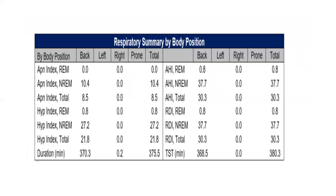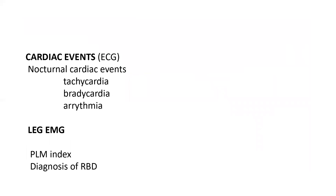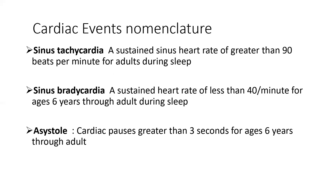The data will be presented in different forms in different polysomnographic machines, including the apnea index in REM and non-REM, the hypopnea index in non-REM, and data in different body positions. The cardiac parameters related to sleep include tachycardia, bradycardia, arrhythmias during sleep, and leg movements — including PLM index — which are important for diagnosis of REM sleep-related disorders.